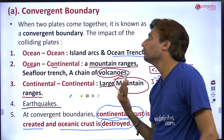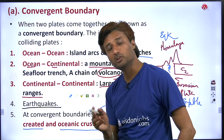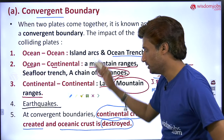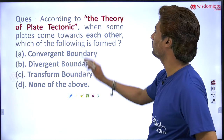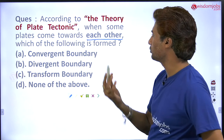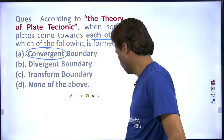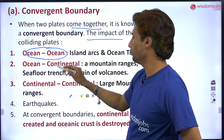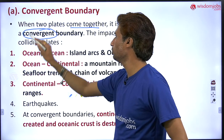After studying the plate tectonic theory, we can tell what is happening at which type of boundary. At a convergent boundary, these are the things we get. Our question was — when plates come towards each other, which boundary is formed? We came to know that a convergent boundary is going to form. The correct answer is convergent — when plates come together, a convergent boundary is formed.